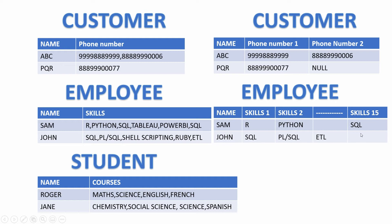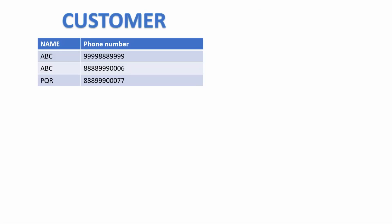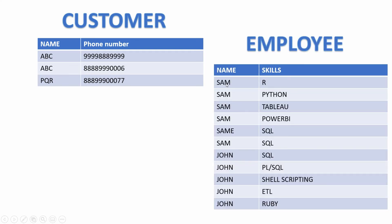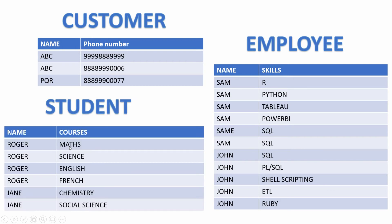And how are we going to search for a particular technology — are we going to look into all 15 columns? That doesn't look like a great design. There comes first normal form. We split the telephone number, skill set, and courses into atomic values, and ensure that no row contains more than one phone number, skill, or course. Now the primary key has changed because our ID column has been duplicated — it's now the combination of ID and skill in our employee table, and so on.